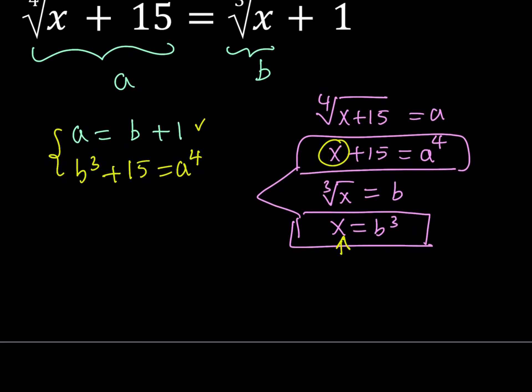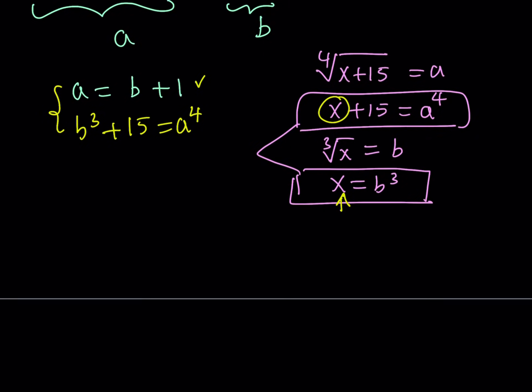Using the top equation, in the bottom one, let's go ahead and replace A with B plus 1. So, we're going to be getting something like this. B cubed plus 15 is equal to A to the 4th and replace A with B plus 1. So, we get B plus 1 to the power 4.